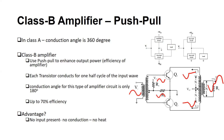In class B, this configuration is called push-pull. For one positive half cycle of the input, the upper part of the circuit conducts the current and delivers power to the load. For the negative half cycle, the bottom transistor conducts the current and delivers current to the load, eventually adding both currents together and giving you the power output.